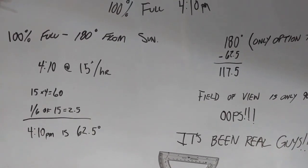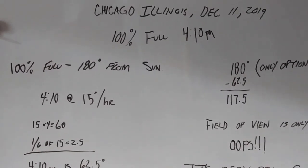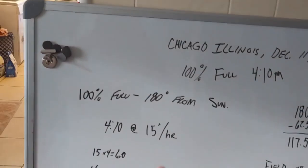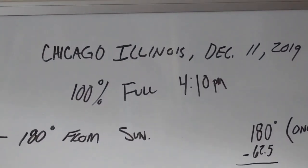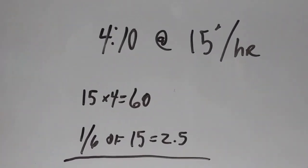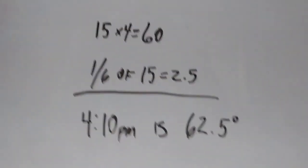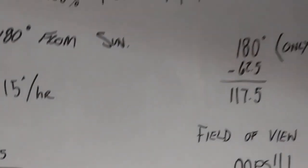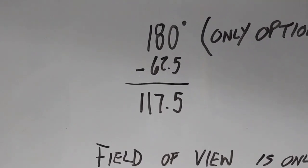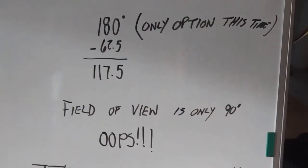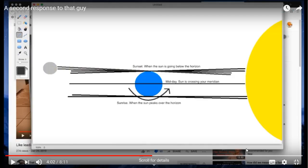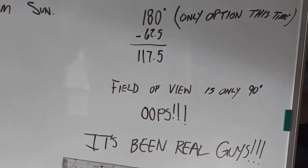We only have a 180-degree field of view: 90 to the east, 90 to the west. Anything over 90 degrees is effectively below the horizon from the observer. So 100% full is 180 degrees from the sun. The observer was standing at 4:10 PM. 4 hours and 10 minutes at 15 degrees per hour: 60 degrees for the 4 hours, 2.5 degrees for the 10 minutes — 62.5 degrees. All you have to do is subtract 62.5 from 180 and you have 117.5 degrees. Well, that's over 90. Hey Blue Marble, you want to model this one, or are you going to stand by the last one and pretend it wasn't a draw?